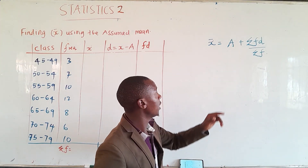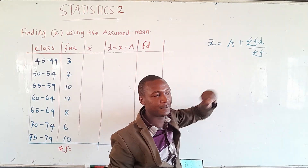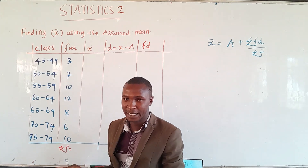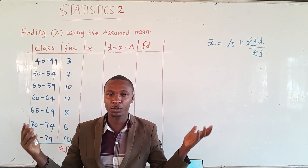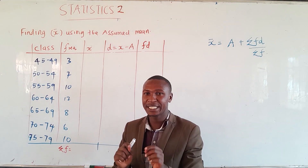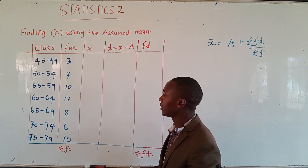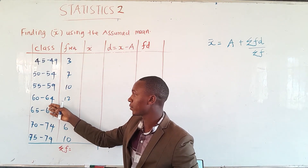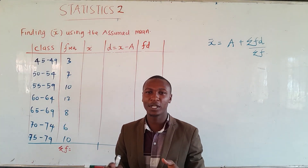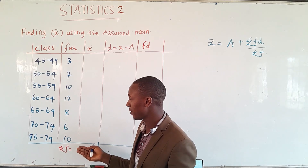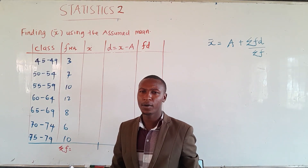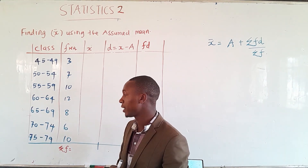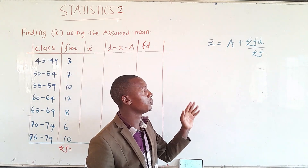Now, what does each term mean? 'a' is the assumed mean — we are going to assume the mean of this data. You can guess any value, but you don't guess an ambiguous value; you guess a reasonable value. For instance, for this data you could say the mean could be 65 or 69 or around 64 or 60. You cannot say the mean could be a thousand or two thousand, because even the data itself cannot reach that level. Therefore, when you assume a mean, you have to assume a reasonable one.